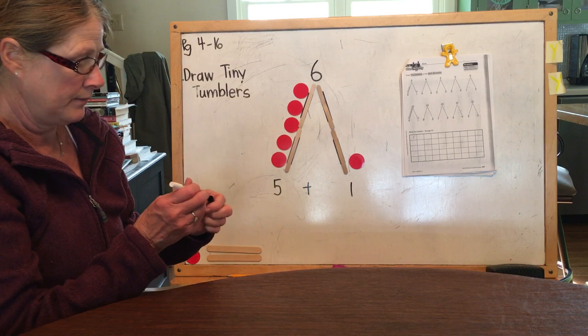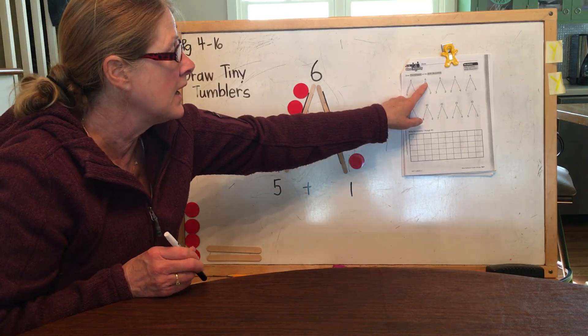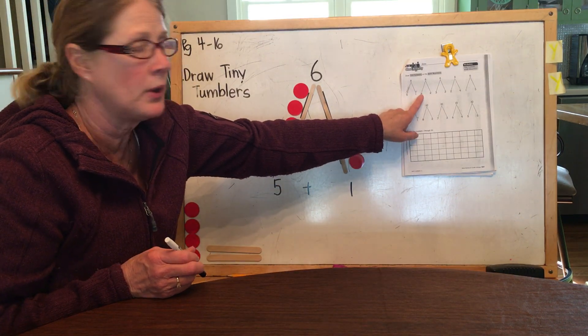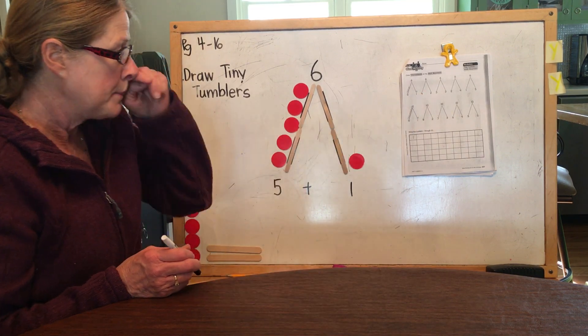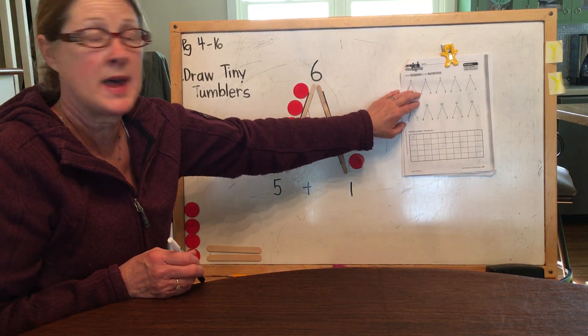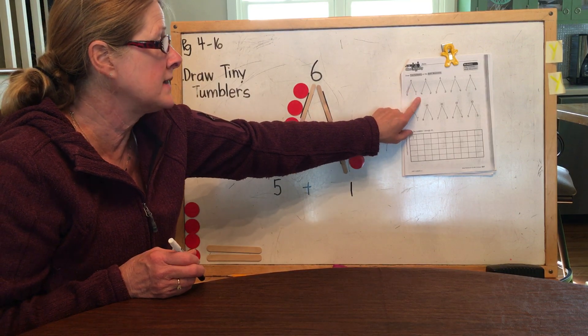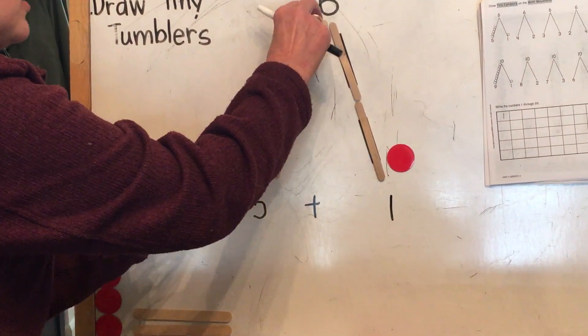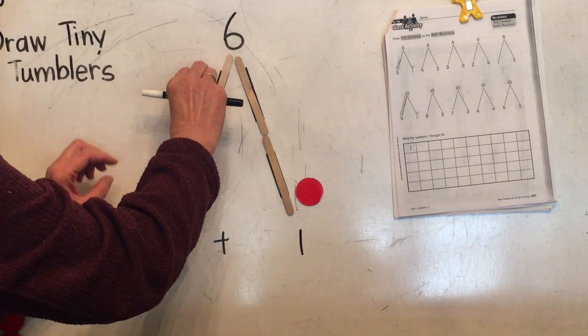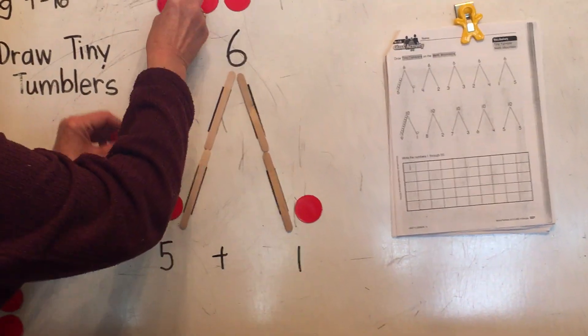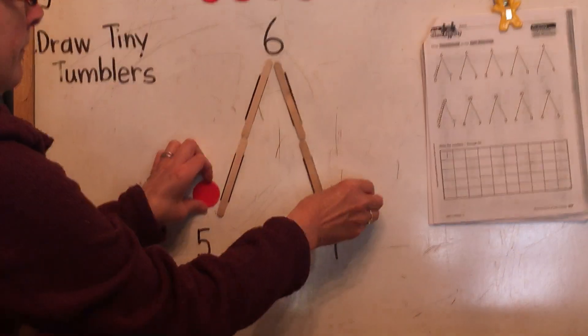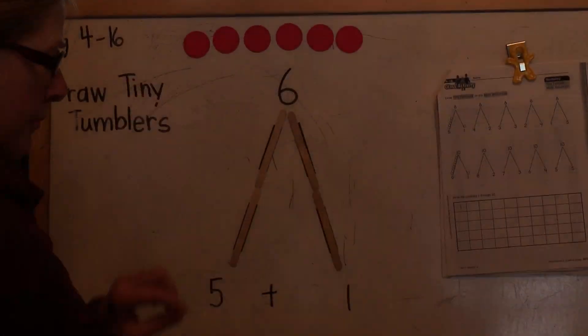Okay, let's do it again. We're going to come over here. Notice in this example, there aren't any tiny tumblers drawn. We have to do that ourselves. So it tells us, okay, let's start with the six on the top again.